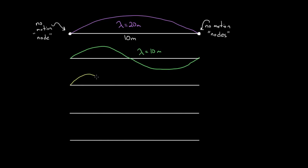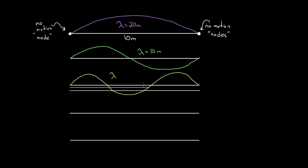The third harmonic has two nodes in the middle. Note that with each successive harmonic you pick up another node in the middle: fundamental has none, second harmonic has one, third has two, fourth has three, and so on. For the third harmonic, one wavelength covers two-thirds of the entire string length. That means the wavelength is two-thirds of 10 meters, which is 20 meters over three.